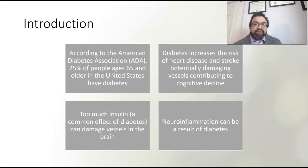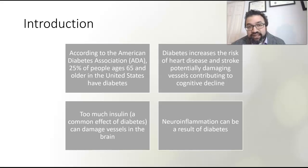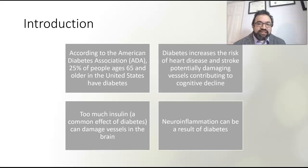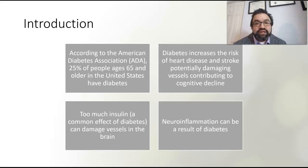If we look at the general population ages 65 and older, 25% of people have diabetes. So cognitive decline and dementia are something that should be considered when we're looking at certain age groups within the context of diabetes, if a quarter of the individuals have this condition.